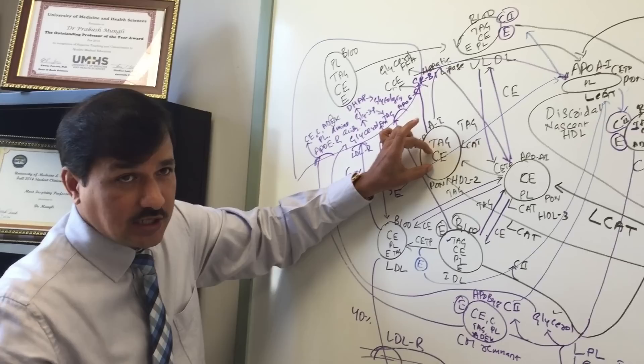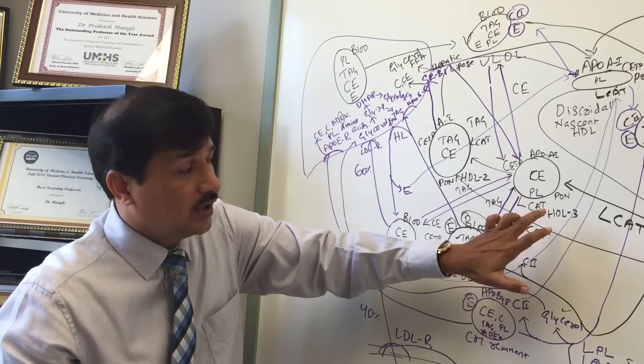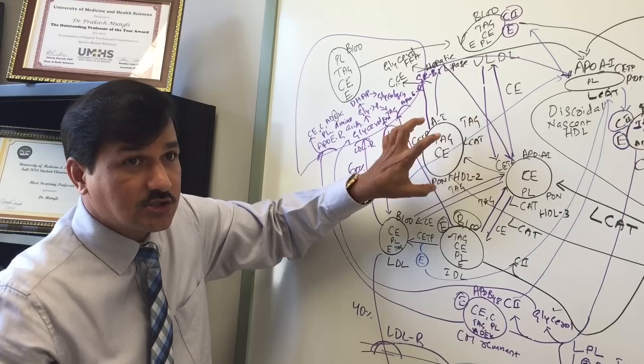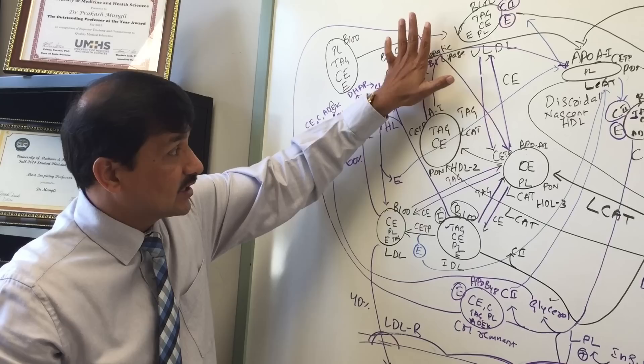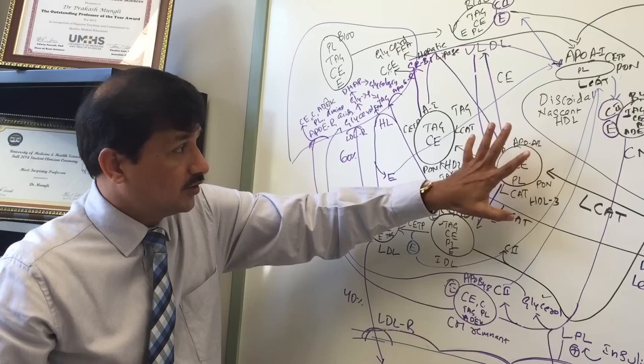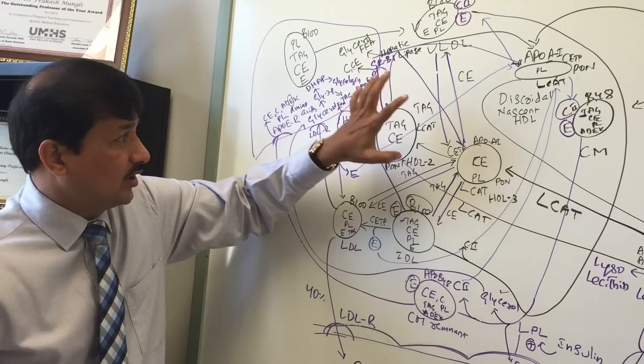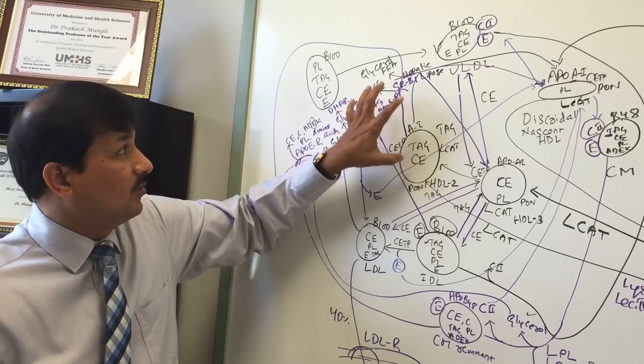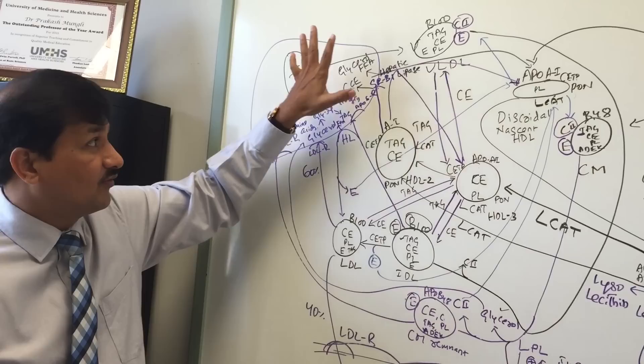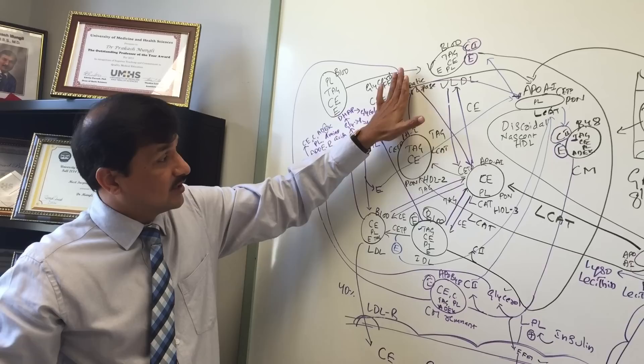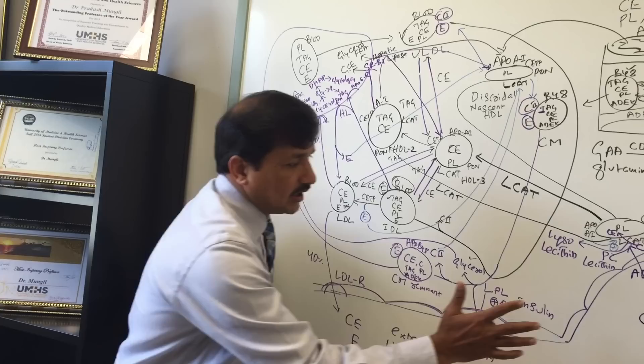The second fate of HDL2 is that it interacts only with hepatic lipase — not with SRB1 — losing only its triacylglycerol, and the remaining molecule (still retaining cholesterol ester) is released as HDL3. So: nascent discoidal HDL → HDL3 (by LCAT); HDL3 → HDL2 (by CETP and LCAT); HDL2 → discoidal nascent HDL (by SRB1 + hepatic lipase) or → HDL3 (by hepatic lipase alone).